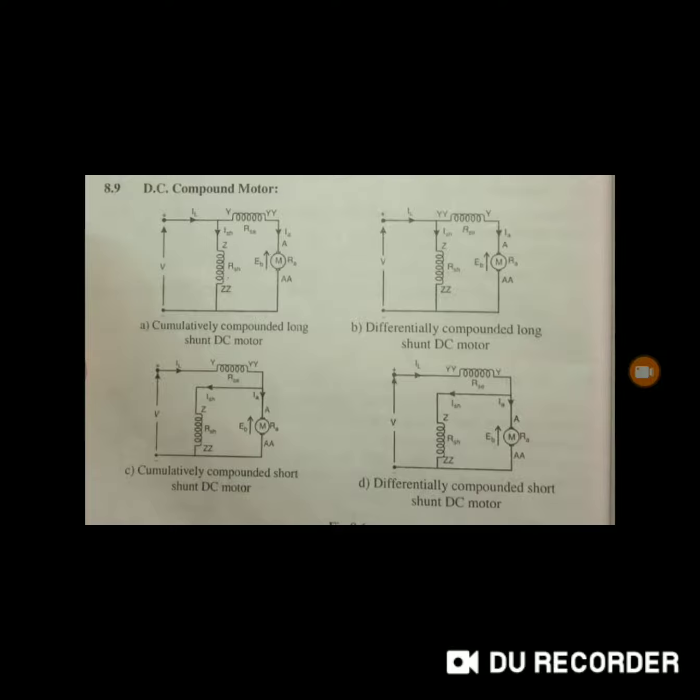DC compound motor. In DC compound motor, it's a combination of both series as well as the shunt windings. In the figure you can see it's having both series winding as well as the shunt winding.